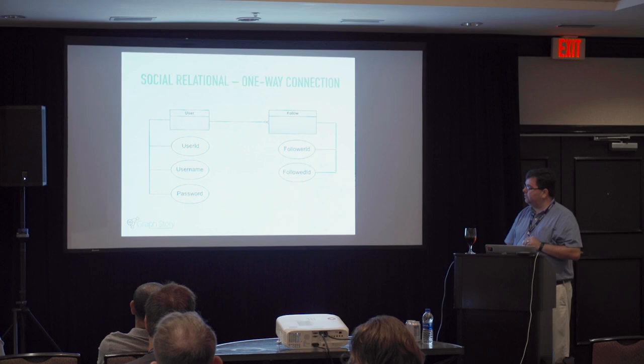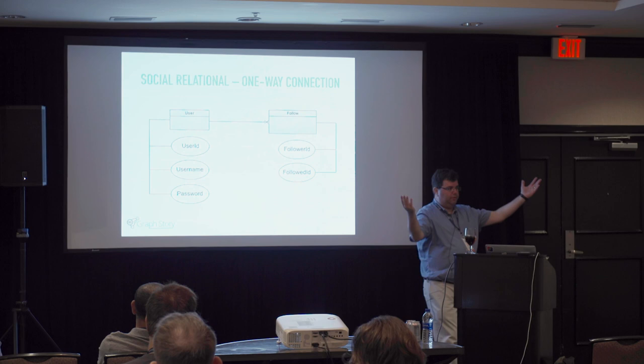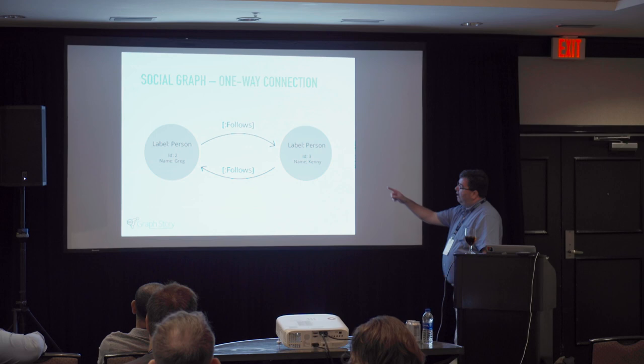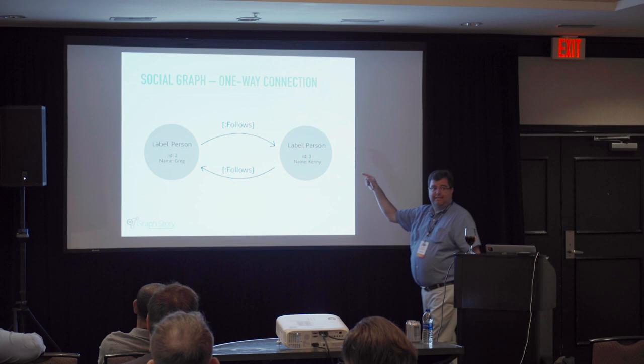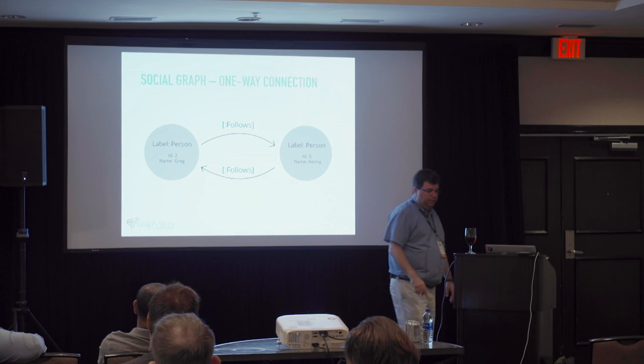For Twitter-style connections in a relational system, you have a follower ID and a followed ID in a separate table — sometimes called a join table — just to create relationships. That's extra overhead you have to create. In a graph, a directional relationship means something: I could follow Kenny, but he doesn't necessarily have to follow me. The relationship is called 'follows,' and that goes in the query — essentially like a table name. Those relationships can also have their own properties.